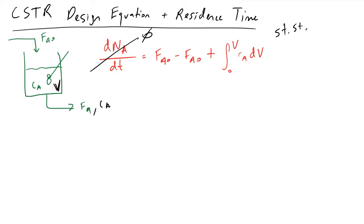So that means that the number of moles of A inside of our reactor is constant, the flow rates are constant, the volume of our reactor is constant, and consequently we can make some very nice assumptions setting this term to zero.